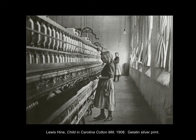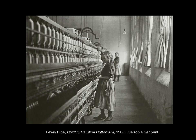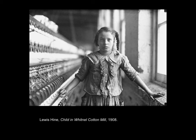From 1908 to 1912, Hine took his camera across America to photograph children as young as three years old working long hours, often under dangerous conditions in factories, mines, and fields. In 1909, he published the first of many photo essays depicting working children at risk. Using a smaller 5x7 Graflex view camera, Hine could view his images by looking down into a viewfinder and a top ground glass. One of his most famous images is Child in Carolina Cotton Mill, 1908.